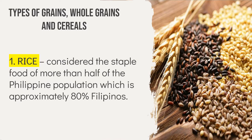The first type of grain is rice. Rice is considered the staple food of more than half of the Philippine population, approximately 80% of Filipinos. Rice consists of edible starchy cereal grains and the grass plant by which it is produced. Roughly one half of the world population, including virtually all of East and Southeast Asia, is wholly dependent upon rice as a staple food. 90–95% of the world's rice crop is eaten by humans. It is cooked by boiling or can be ground into a flour, and is eaten alone or in soups, side dishes, and main dishes in Asian, Middle Eastern, and many other cuisines.